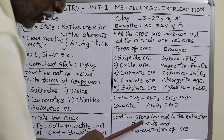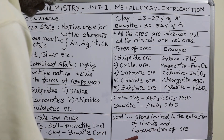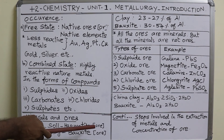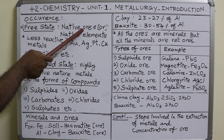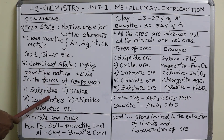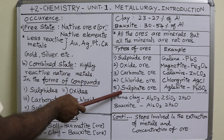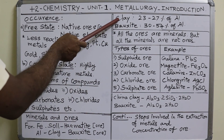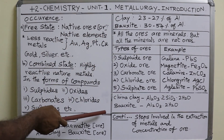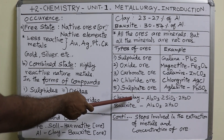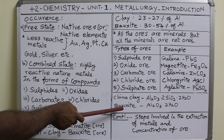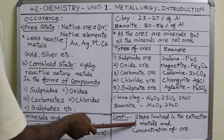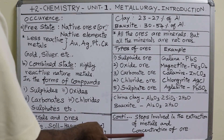With this introduction, in the next video we will talk about the steps involved in the extraction of metals and various types of concentration of ores. Children, remember that many questions can be asked from this introduction — for example, native ore examples, the definition of native ores, types of ores, the definition of ore, and the difference between ore and mineral using examples like clay and bauxite for aluminum. Even the molecular formulas of china clay and bauxite can be asked in one-word answers or multiple choice questions. This introduction is very important as a foundation for understanding the next topics.